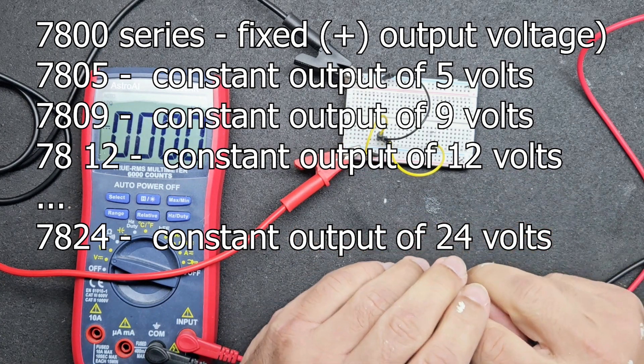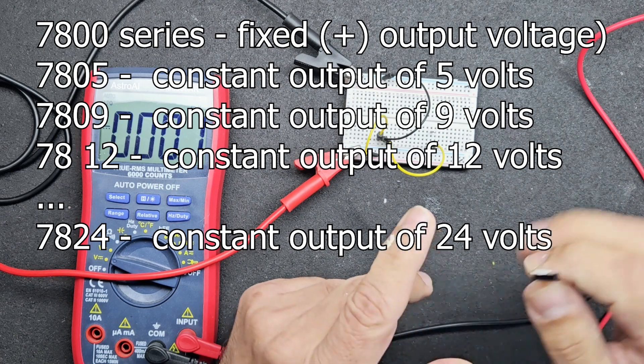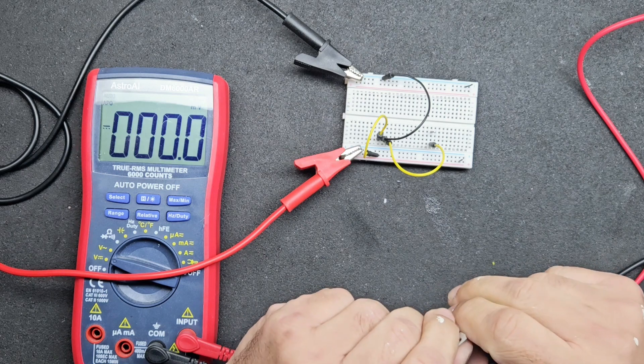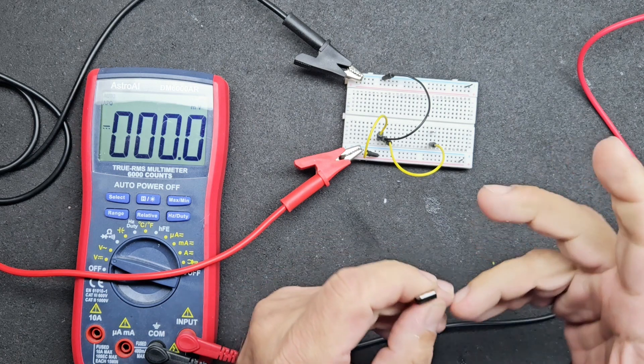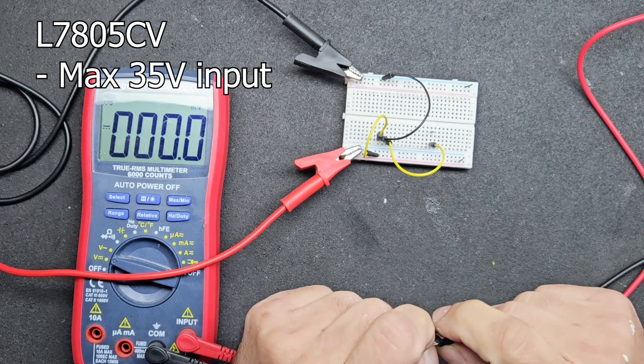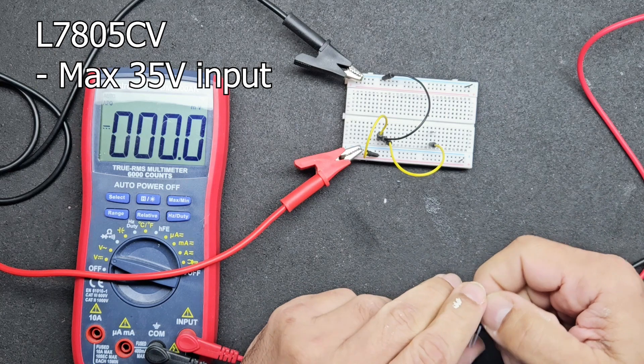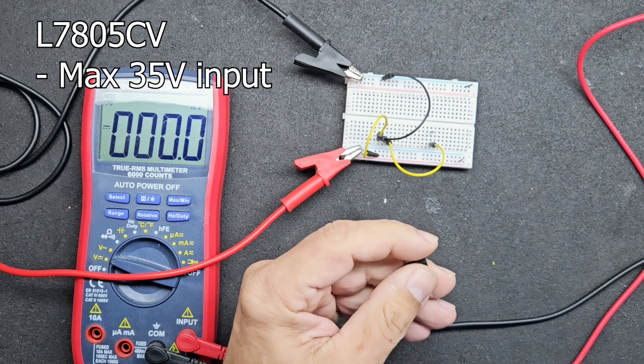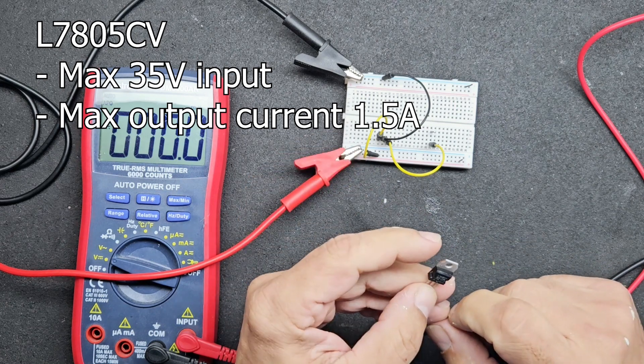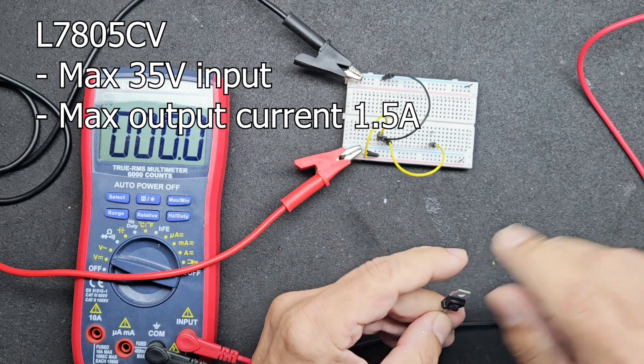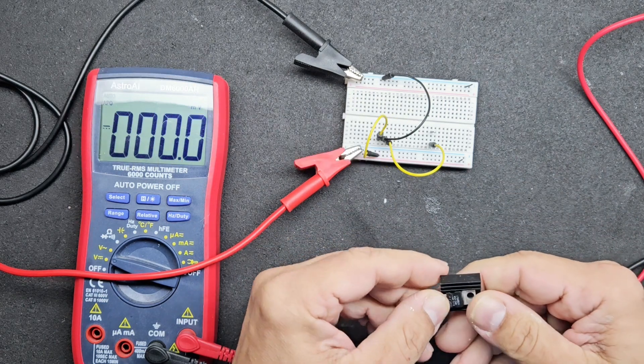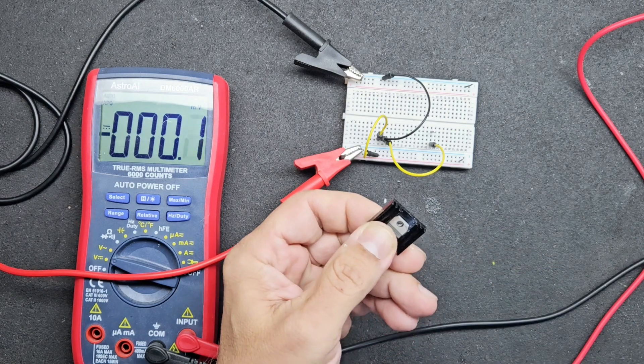The 7805 has an output of 5 volts, similarly the 7809 produces 9 volts output, 7812 produces 12 volts, and so on. The 7800 series goes up to a maximum of 24 volts. Key features: it can take a variable voltage up to a maximum of 35 volts, however the recommended voltage for this regulator is between 7.5 to 25 volts, and it has a maximum output current of 1.5 amps. It comes with built-in thermal protection to prevent overheating which increases its lifespan. However, if it heats up too much, you can add a heat sink to it such as this one, which attaches with a small screw.